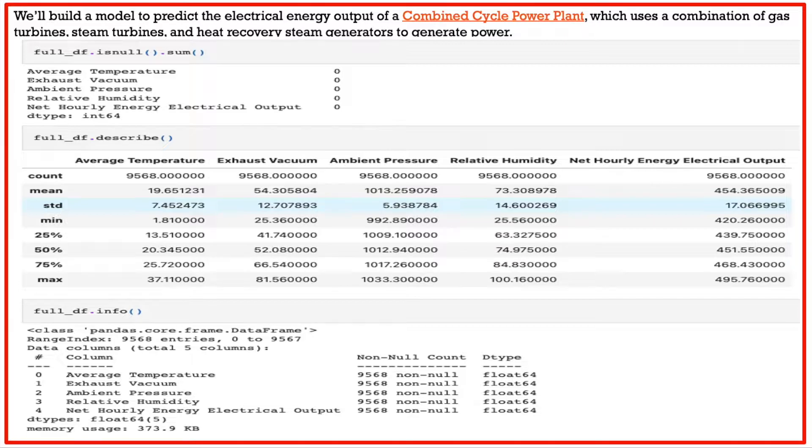Let's quickly take a look at our data set. Our data set does not have any null values and here we see the statistical description of each of the variables in the data set. We also see that each of these values for the columns are float data type.